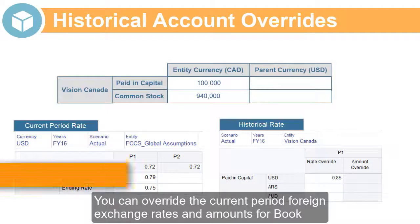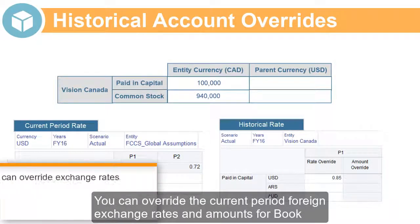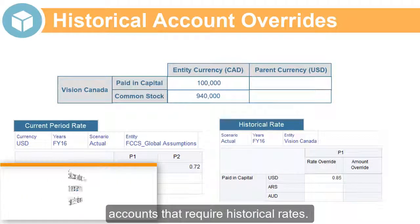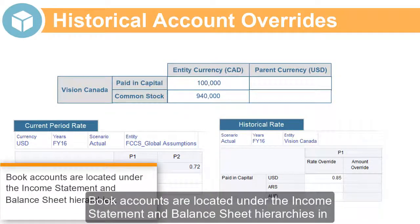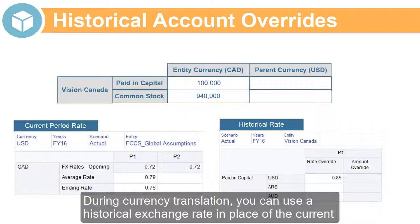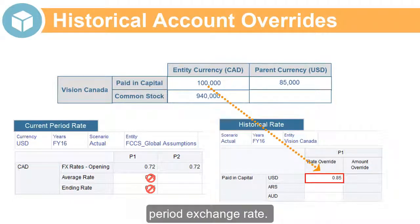You can override the current period foreign exchange rates and amounts for book accounts that require historical rates. Book accounts are located under the income statement and balance sheet hierarchies in the account dimension. During currency translation, you can use a historical exchange rate in place of the current period exchange rate.